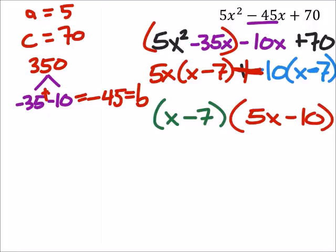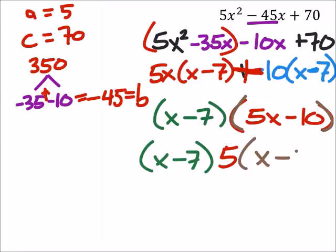Now, we can continue this, because in this second set of parentheses, 5x minus 10, we can factor out a 5. So I still have the x minus 7 here, but I can factor out a 5, and then what do I have left? I've got x minus 2.